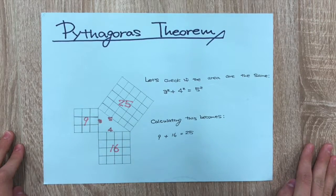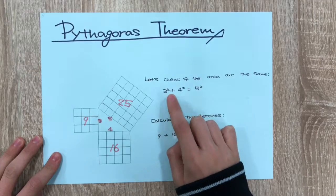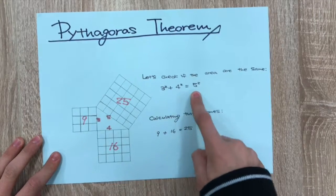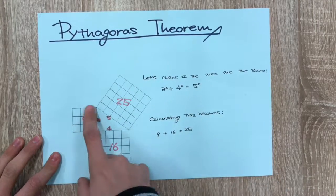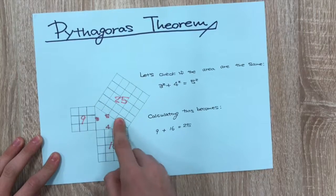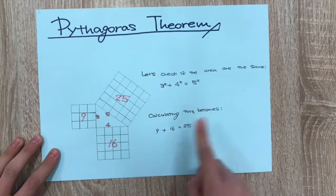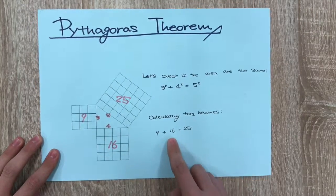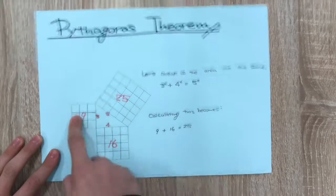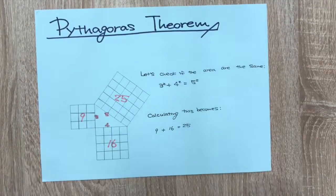Let's check if the areas are the same. 3² + 4² = 5². You have 3, 4, and 5. Calculate: 9 plus 16 equals 25. 9 plus 16 equals 25. Okay, it's correct.